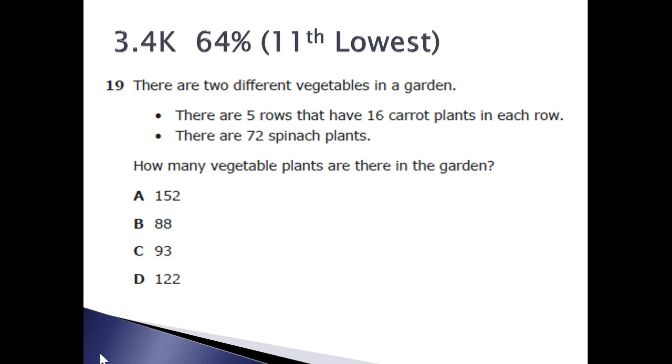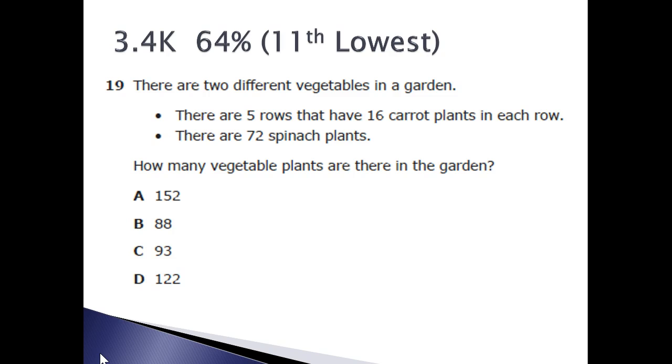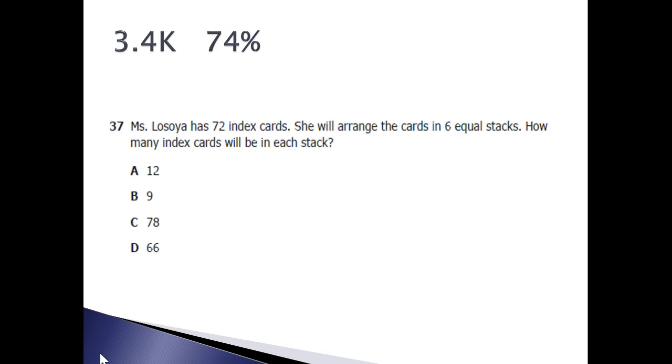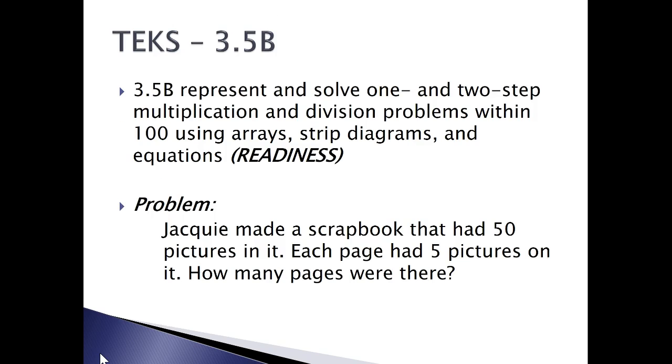Now, 3.4K, this item was the eleventh lowest scoring item with sixty-four percent mastery. Notice it is a multi-step problem. This item, the kids did a little bit better with seventy-four percent. Mrs. LaSoya has seventy-two index cards. She will arrange the cards in six equal stacks. Notice that this is just a one-step problem, whereas before, this was a multi-step problem. We did have a released item as well in 2015.